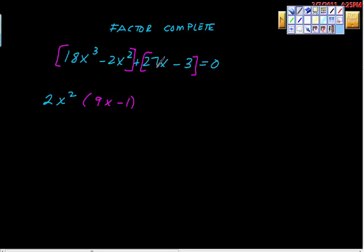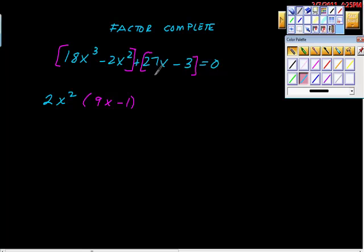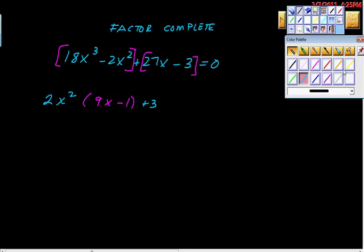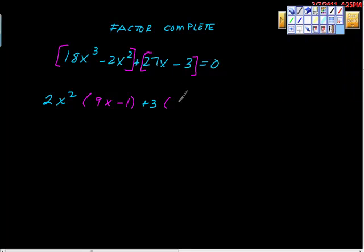And then here, what can we factor out here? We can factor out 3. And wouldn't it be great if we factored out 3 and the remaining factor happened to be 9x minus 1? That would be really cool and you'd think I was so smart. Oh, no, you already think I'm so smart. Gotcha. So 3 times what? 3 times 9x. Looking good. 3 times what is negative 3? Negative 1, right? Equals 0.